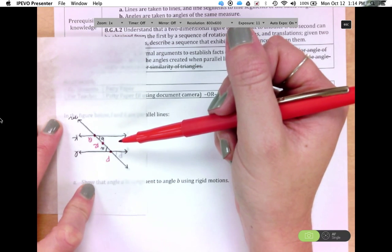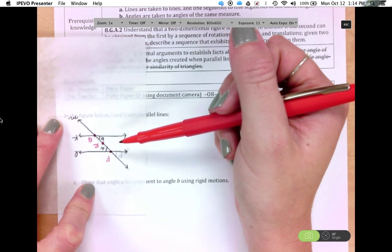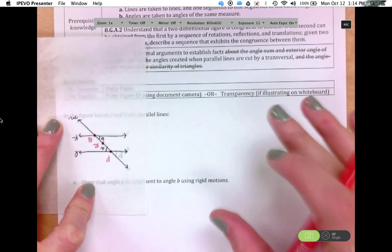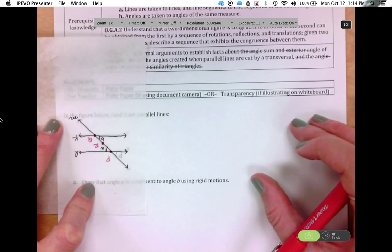So then rotations preserve angle measure. So angle A is congruent to angle B. So that's another alternative way that students might see this through rigid motion.